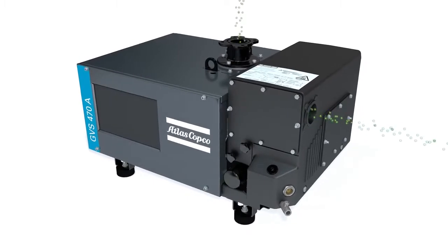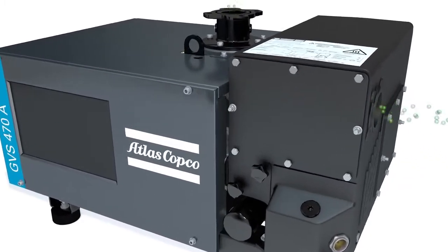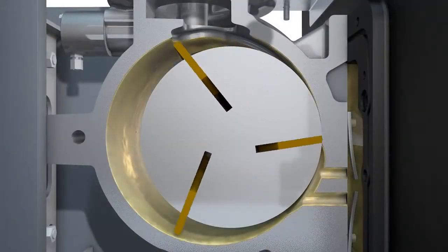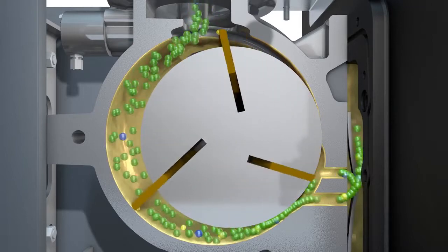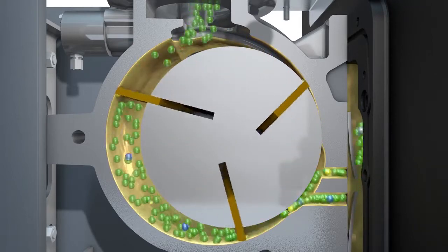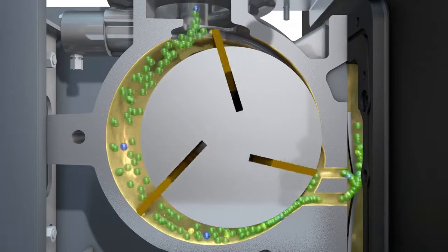As the rotor starts spinning, centrifugal force makes the vane slide to the outside and seal against the stator housing. A volume of process gas gets drawn in through the inlet valve as the rotor turns. This volume is then isolated from the process side and the exhaust.